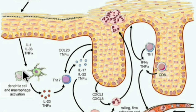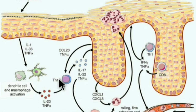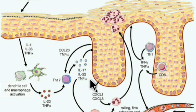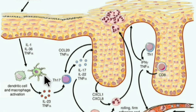The dendritic and macrophage cells are activated and they secrete interleukin-23, which causes Th17 cells to produce interleukin-17 and interleukin-22. Interleukin-6 and TGF-beta can convert naive T cells into Th17 cells.